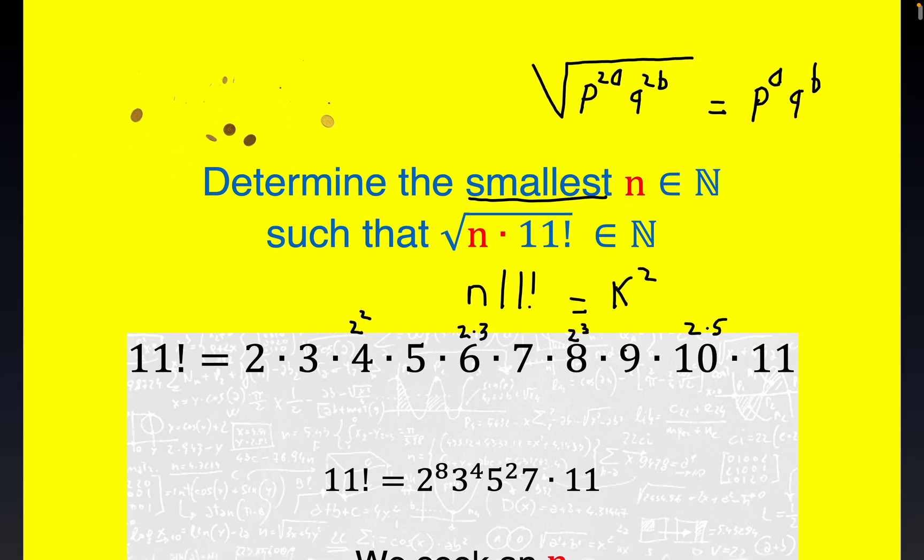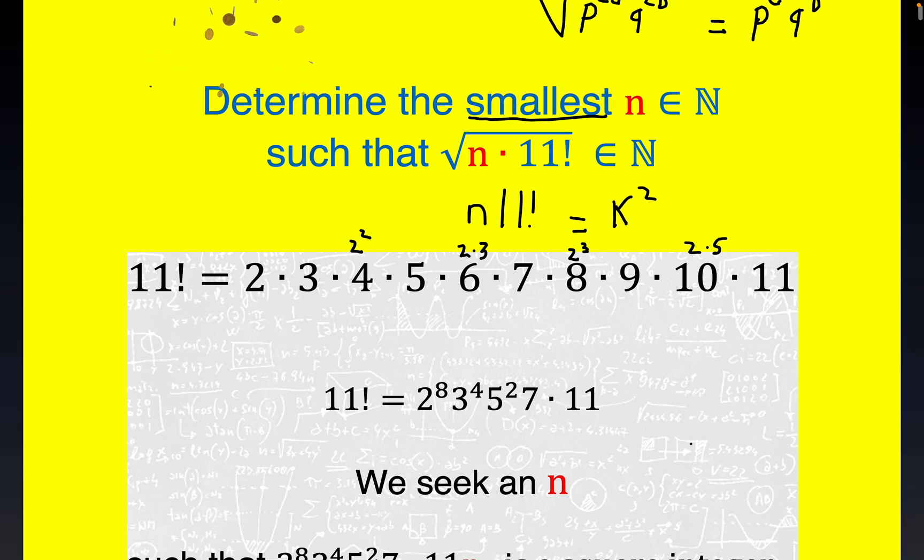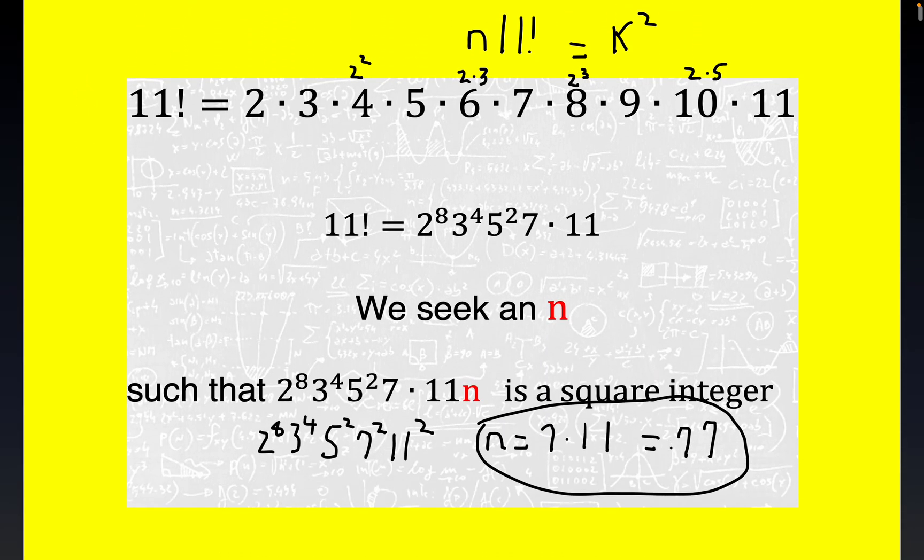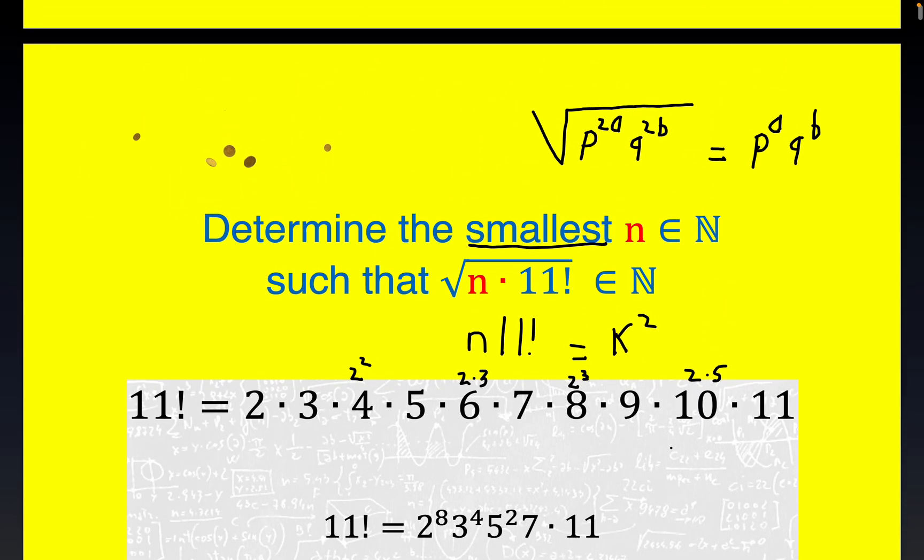All right y'all, that's it. And again, I like the problem quite a bit because I think 11 factorial is in the 14 million range. We never had to compute 11 factorial, we just had to compute its prime factorization and do some routine manipulations with exponents to get the n that we were seeking. So the answer here is n equals 77.